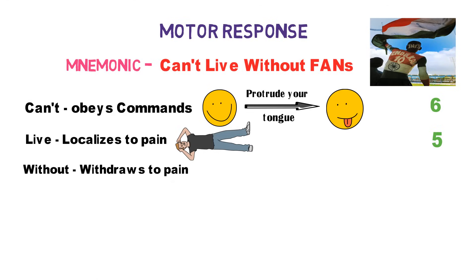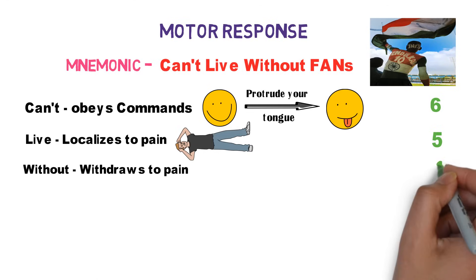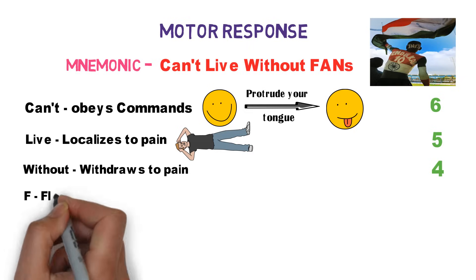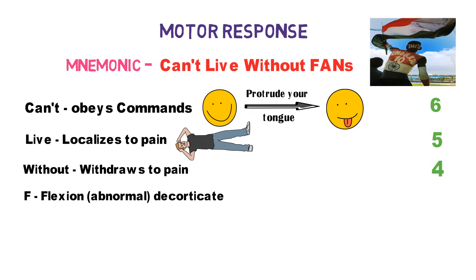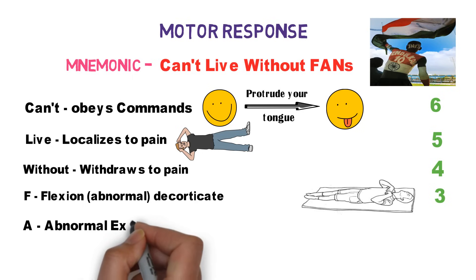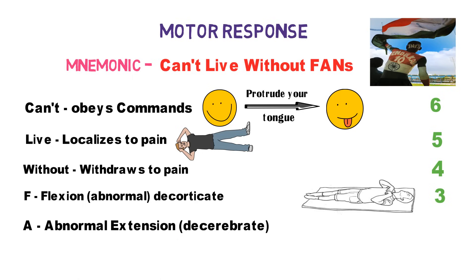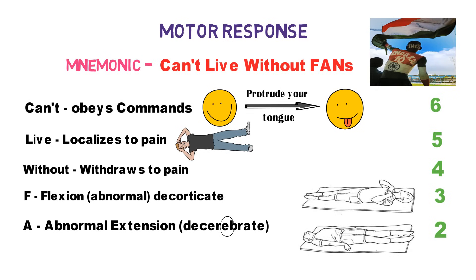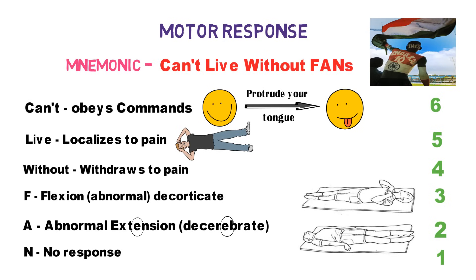W in 'Without' stands for withdraws to pain, giving a motor score of 4. F stands for abnormal flexion, also referred to as decorticate posturing, as shown in the animation. A stands for abnormal extension, also referred to as decerebrate posturing — remember that 'decerebrate' has an extra E compared to 'decorticate,' so extension is associated with decerebrate, giving a motor score of 2. N stands for no response, so the motor score is 1.